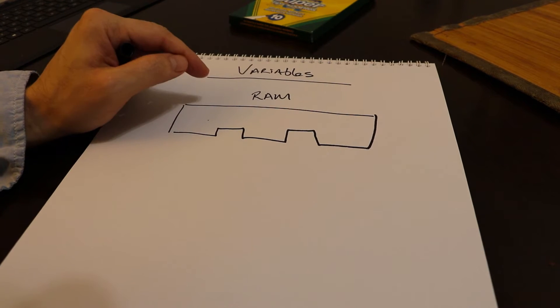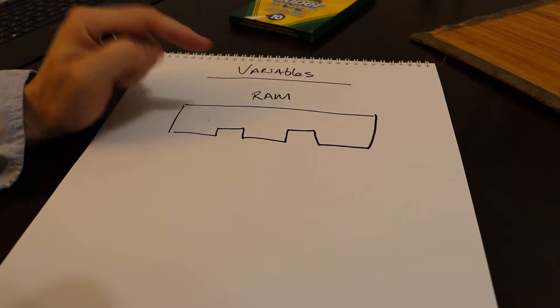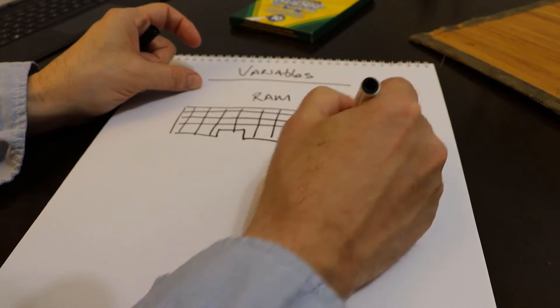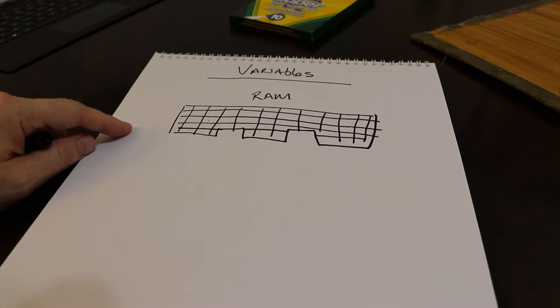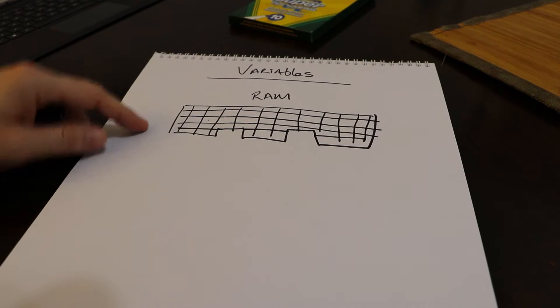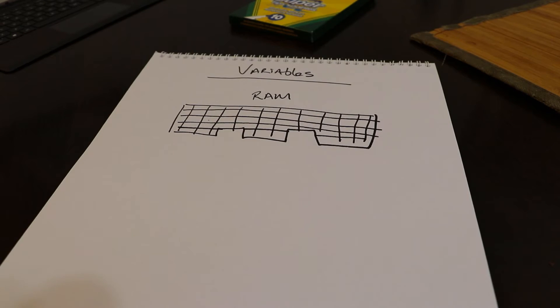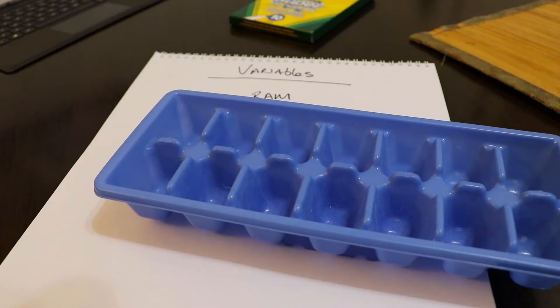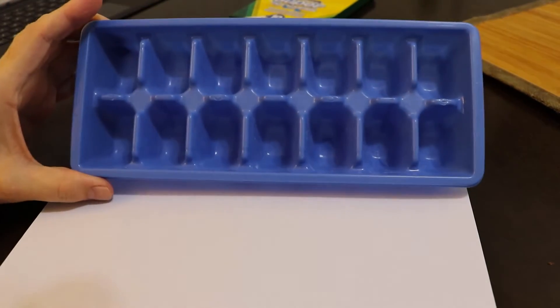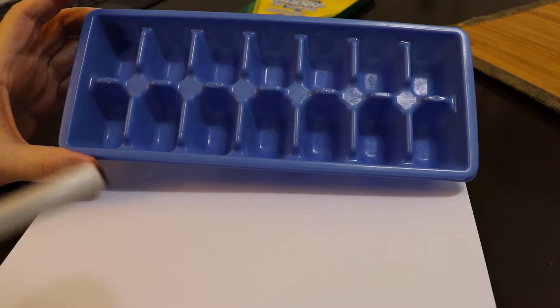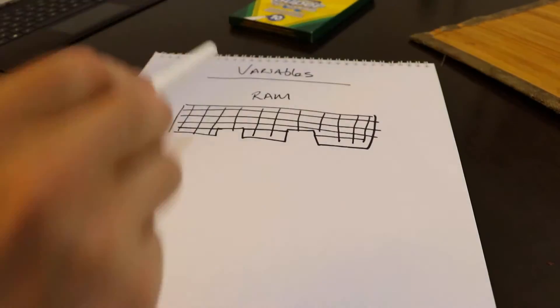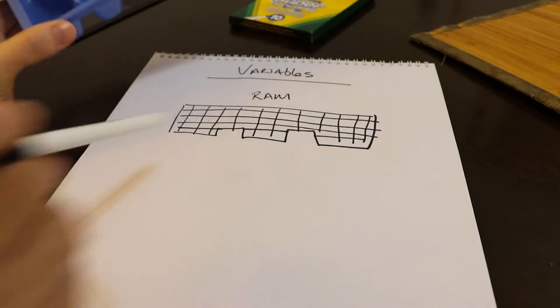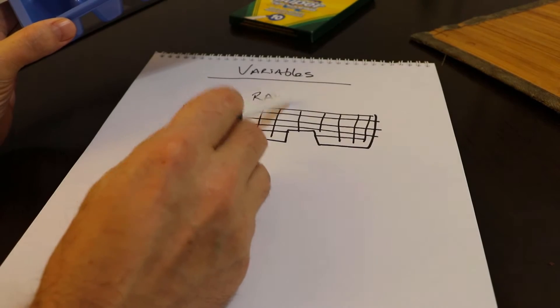So you have to imagine that the RAM is made up of tiny little cubicles in here. So let's just draw that. Now you know why I became a software developer and not an artist. So just imagine these are all little cubicles, kind of like an ice cube tray. This is RAM.